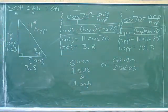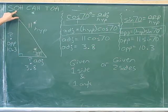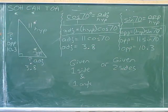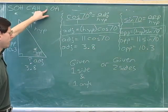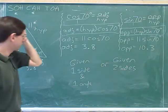It should be plain from SOH CAH TOA that if you know the hypotenuse, you should use the sine to find the opposite side, and use cosine to find the adjacent side. Notice that the tangent isn't very useful when you're given the hypotenuse.